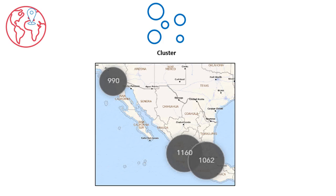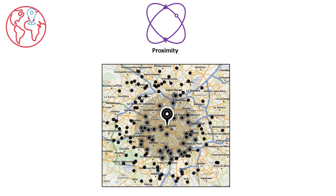We can cluster adjacent markers together to better locate the areas with a high concentration of markers. For example, this geomap shows the clusters of customers in Mexico. We can easily see the southern tip of Mexico seems to have more customers than the rest of the country. In addition, we can use geomaps to show proximity. In this example, the geomap shows all customers located within 10 miles of the Louvre in Paris.